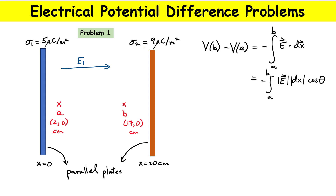The orange plate is also positively charged. Things that are positive produce electric fields that point away from them, so this is going to be the electric field E2, pointing to the left. You can calculate the magnitude of each one: for E1, take the charge density sigma1 and divide by two times epsilon zero. For E2, use the nine microcoulombs per meter squared charge density. We know the directions are opposite, so I'll use a standard coordinate system with positive x to the right.